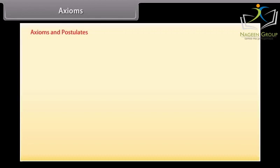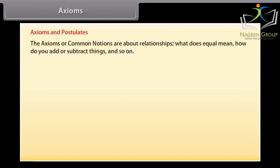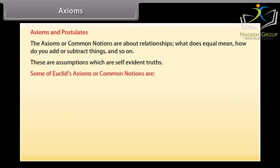Axioms. Euclid describes axioms and postulates which we will discuss here. The axioms or common notions are about relationships. What does equal mean? How do you add or subtract things? And so on. These are assumptions which are self-evident truths.